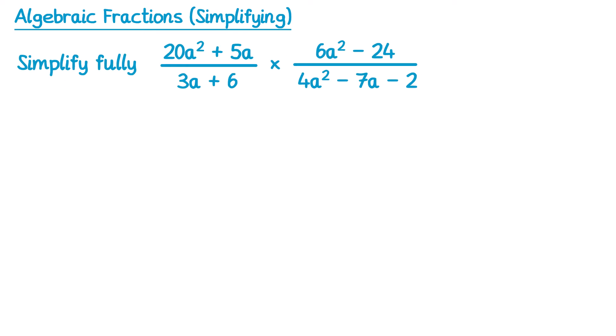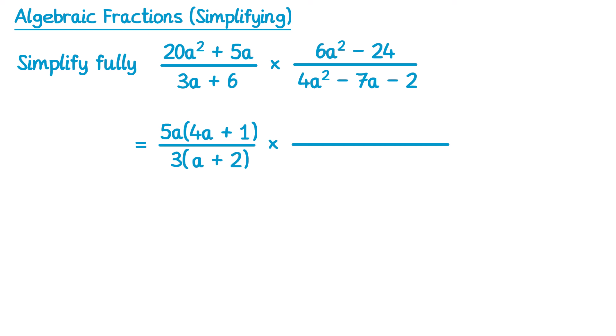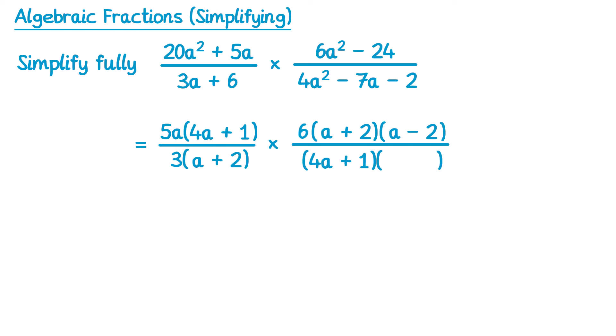Sometimes we get questions where there's more than one fraction — you can see these two have been multiplied together. To do a question like this we're going to start by factorising everything we can. On the left fraction on the top we can factorise out 5a, and inside the bracket we'd need 4a plus 1. Then on the bottom there's a common factor of 3, so we factorise out a 3, and inside the bracket we'd need a squared minus 4. Now if we look inside that bracket we've got a squared minus 4, which is a difference of two squares, so we can factorise that again to give a plus 2, a minus 2. Now on the bottom of the right fraction, it's one of those difficult factorisations — it's going to be two brackets, and looking at what we've factorised so far we can see we have a 4a plus 1, so this one will probably include 4a plus 1, and indeed it does, and the second bracket would be a minus 2.